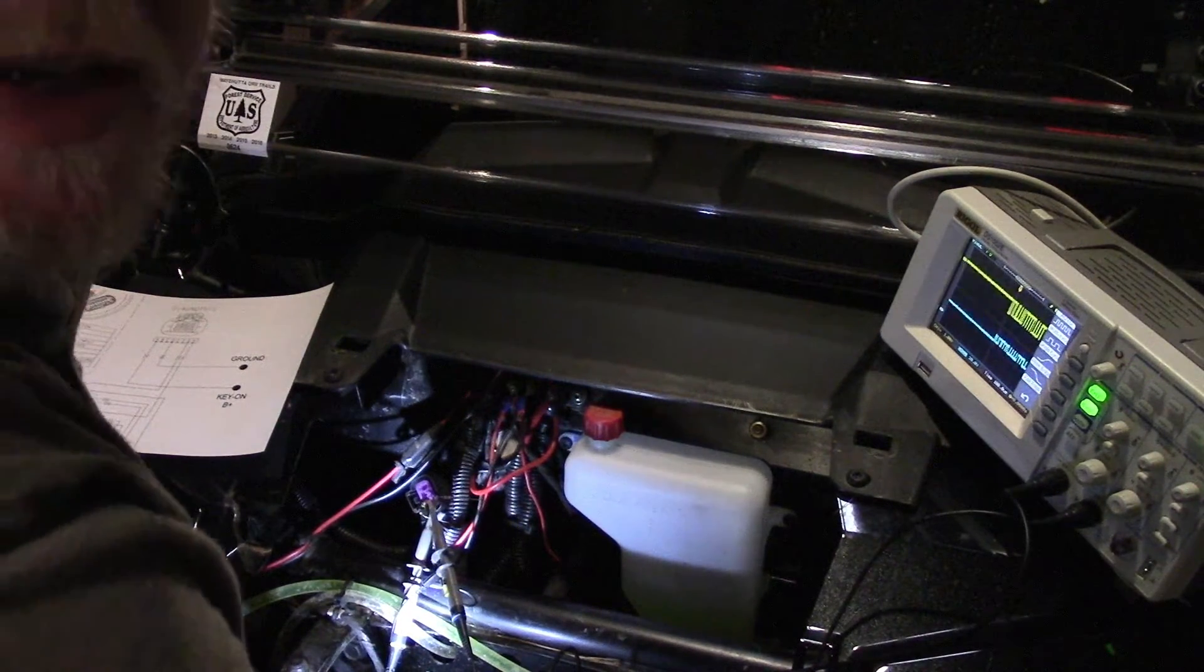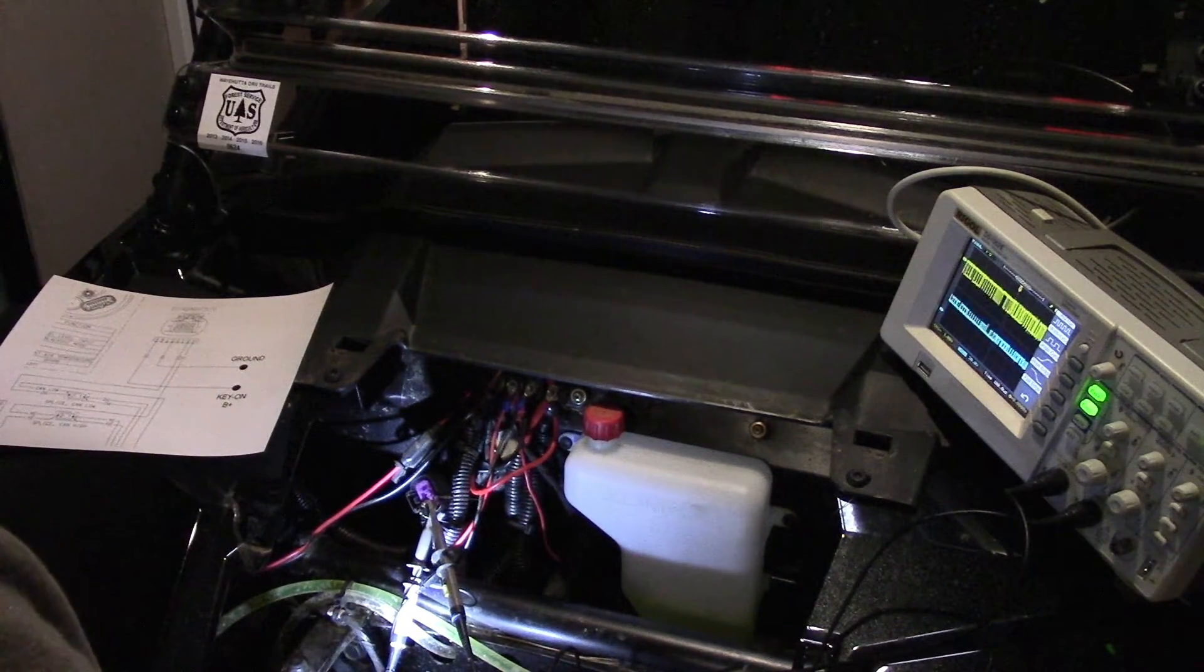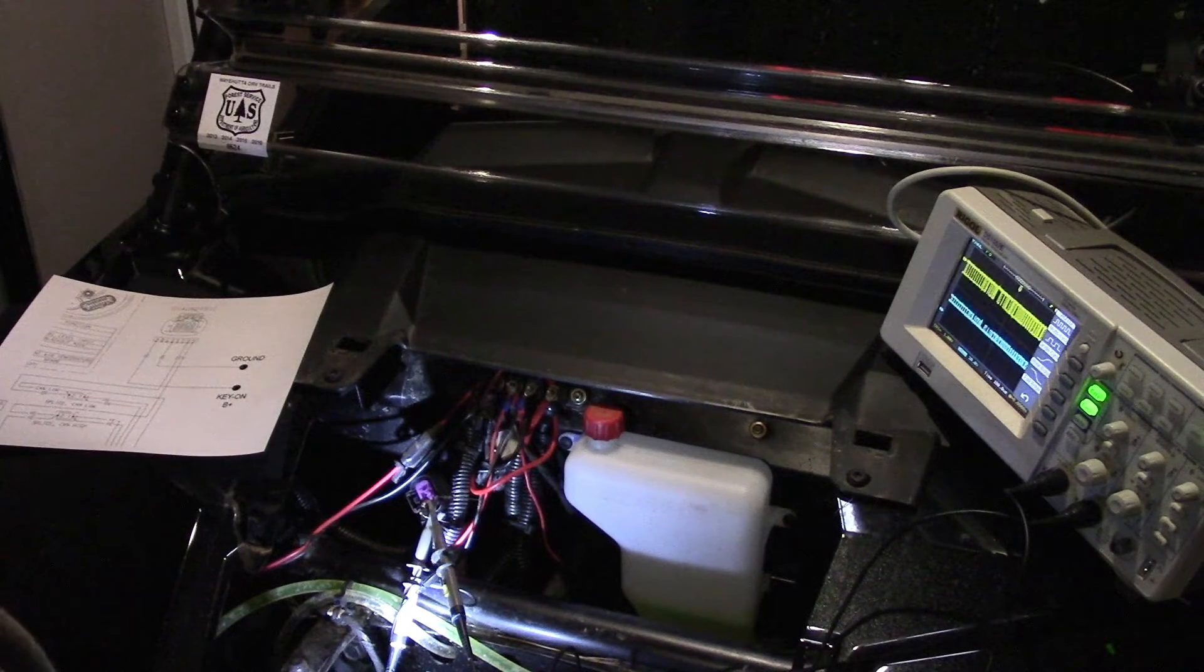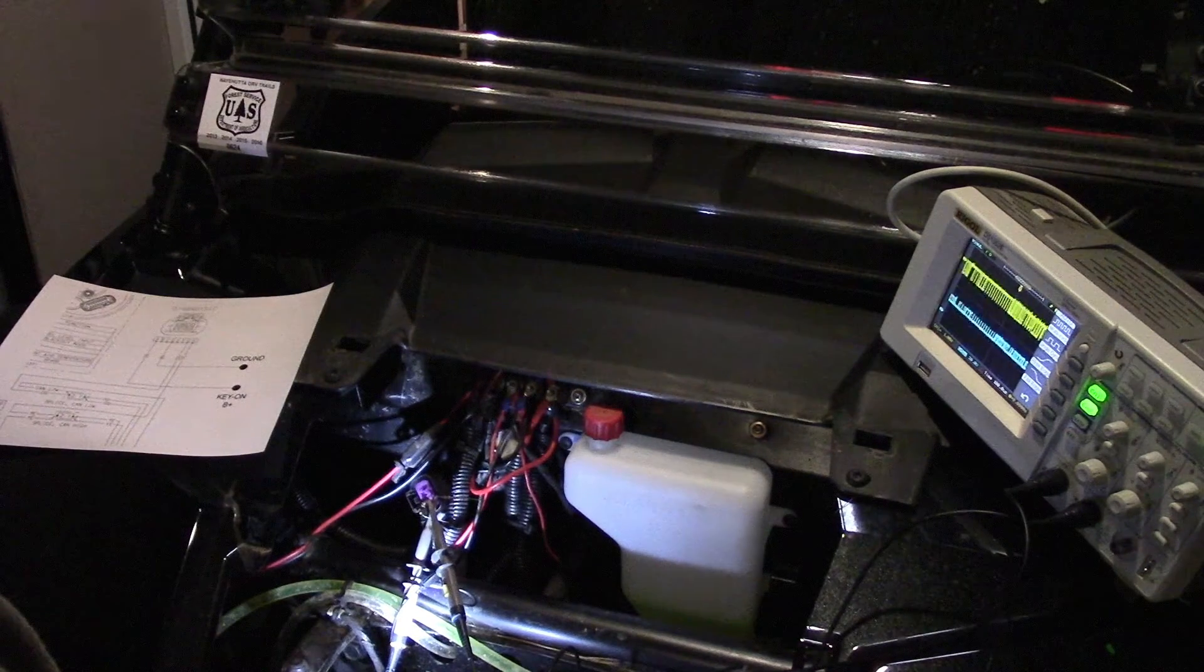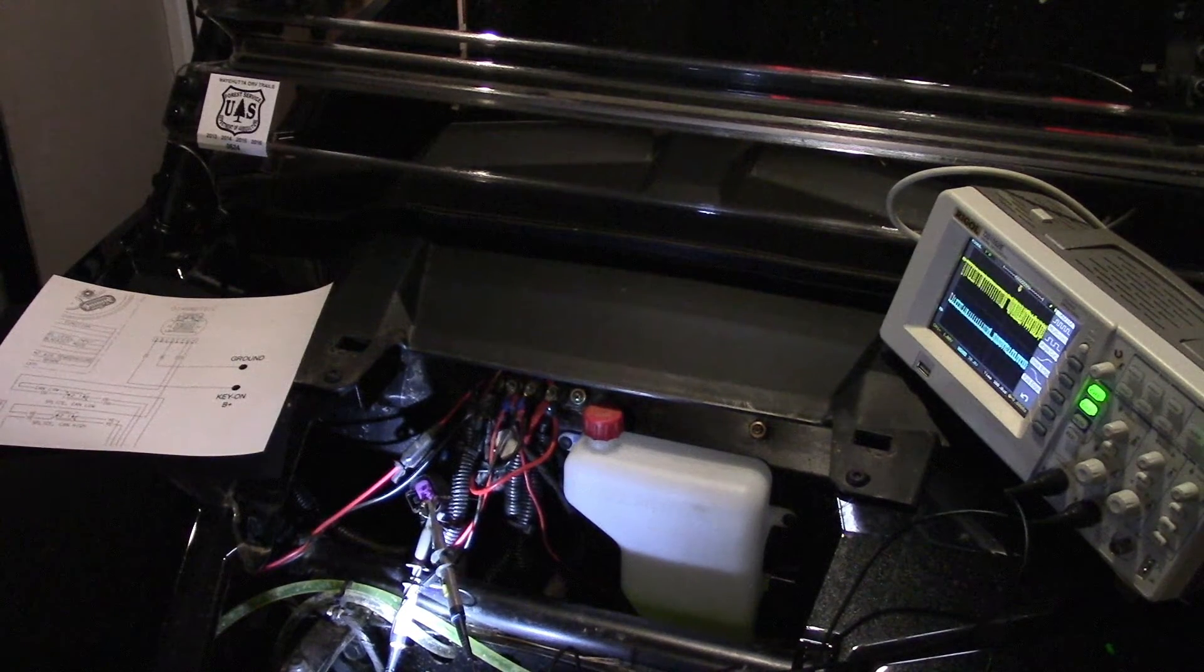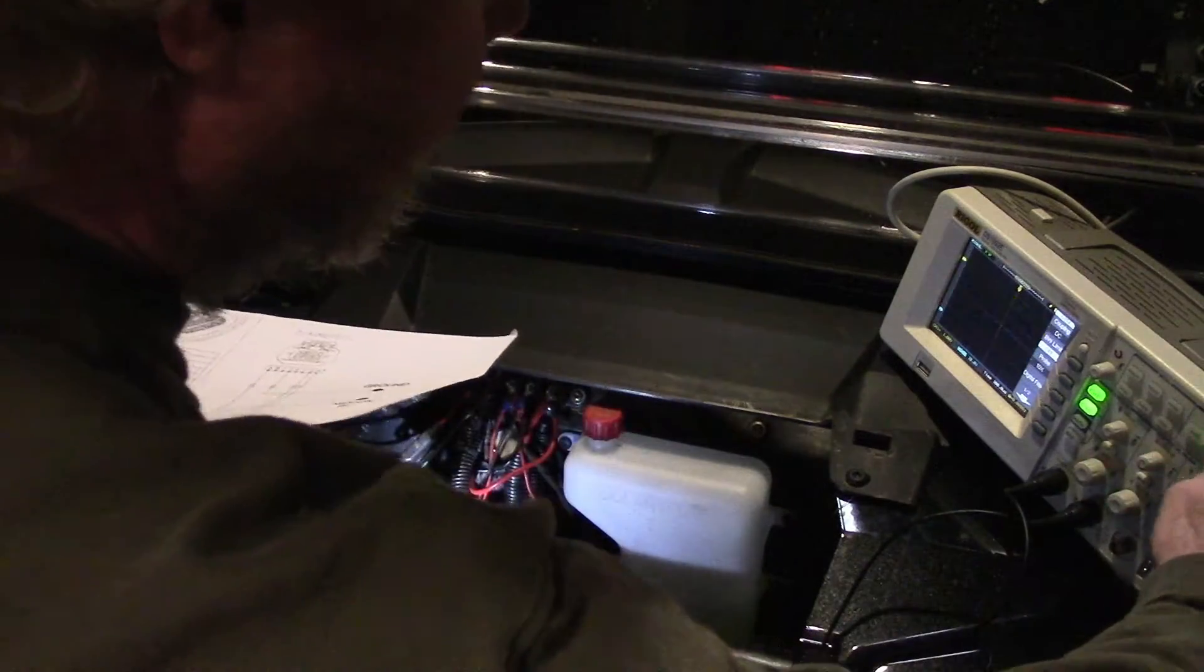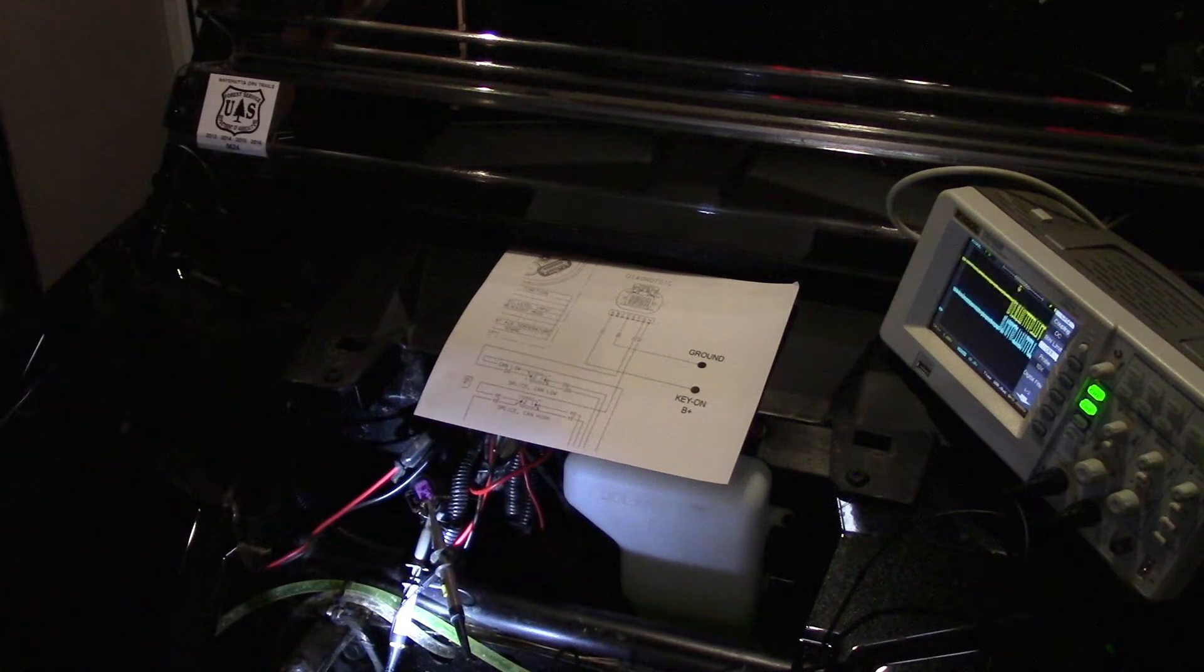Basically what I'm trying to do here is I just don't want to damage my logic analyzer. The Saleae that I'm going to use will actually go up, I think it's 30 volts it's protected to. But ideally you don't really want to overextend it. So what we're looking for is the low side signaling and then just to check the voltages. Okay, and there's lots and lots of data going back and forth. Now we're actually going to connect the logic analyzer.